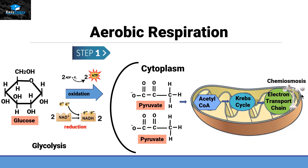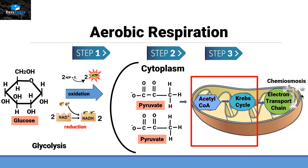The first step is that glucose enters the cytoplasm of the cell, where it converts itself into a molecule called pyruvate — this process is called glycolysis. The second step is that pyruvate enters the mitochondria and converts itself into acetyl-CoA — this process is called pyruvate oxidation. The third step is that acetyl-CoA enters the Krebs cycle, which we will discuss in detail in this video.